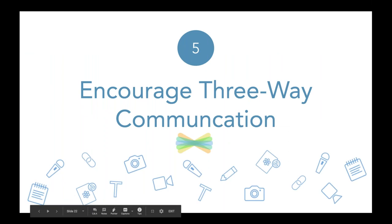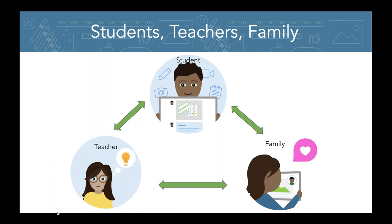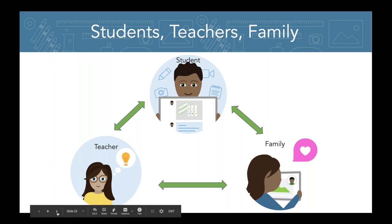Tip number five: encourage three-way communication. That involves students, teachers, and family. Not only can a teacher communicate with a family, but the family can also communicate back to the teacher. In Seesaw, that can be a private message back to the teacher from an announcement, or a family leaving a comment for the student. Of course, the student can always share their work to their family on Seesaw as well, and the relationship between teacher and student involves a lot of back-and-forth communication too.